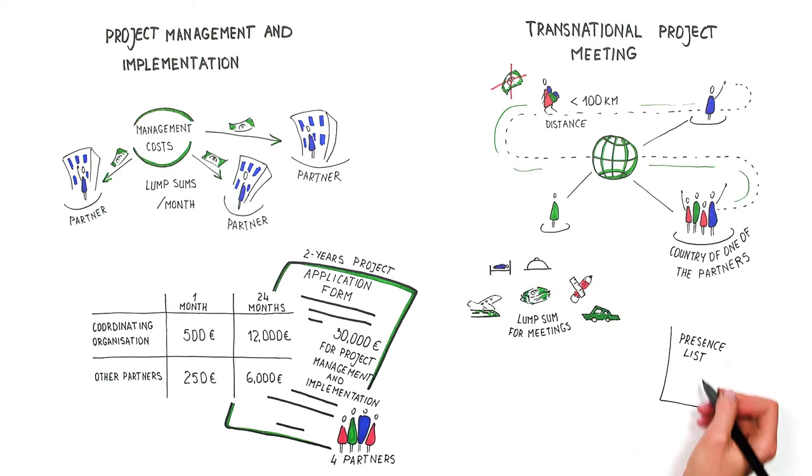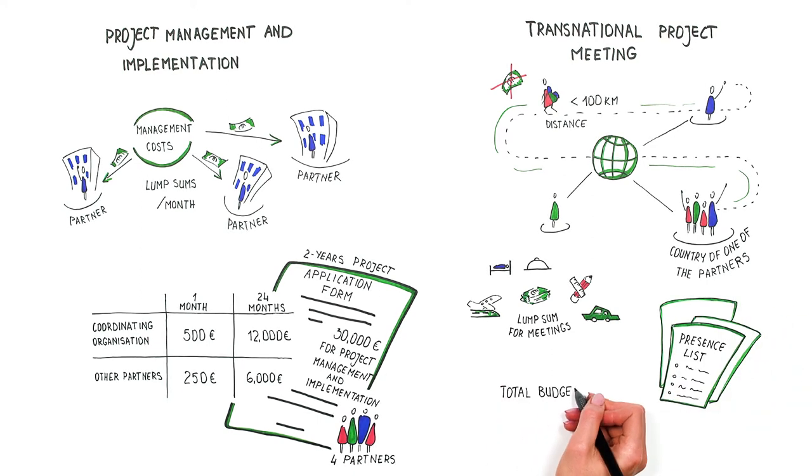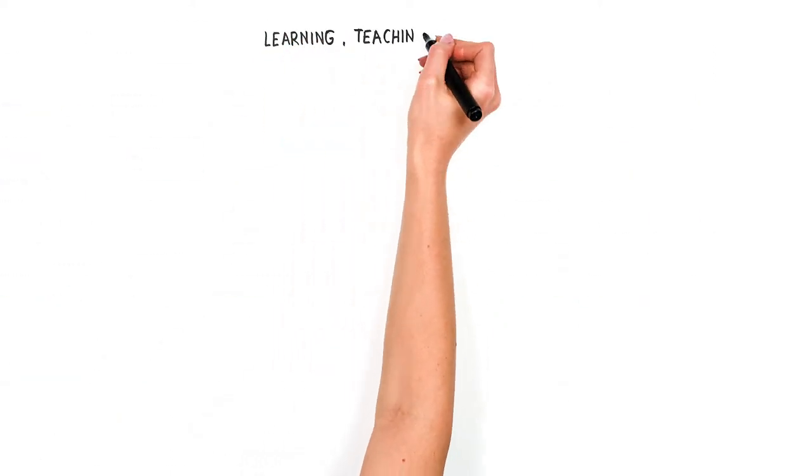The lump sum includes costs for travel, lodging, food, work materials, program visits, and local travels. You do not have to justify how you specifically spend the money, but you need to provide signed presence lists. The total amount of all lump sums you receive is your total budget for the whole meeting.